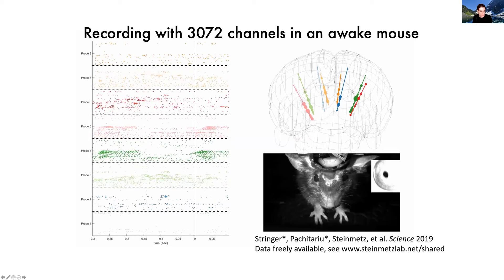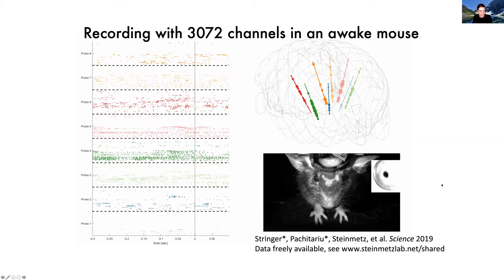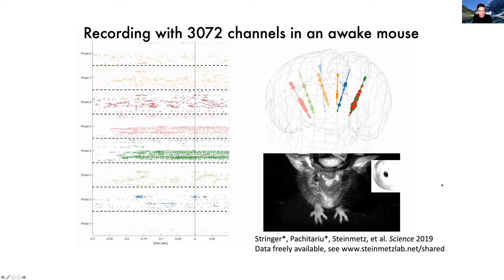This enabled us to sample neurons from multiple different brain regions all simultaneously. And the small size and form factor of the NeuroPixels probe made it possible to do this experiment without major difficulties.